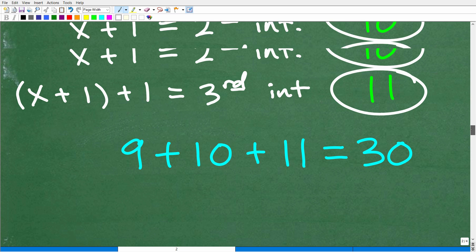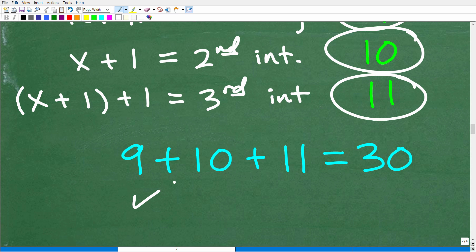And if we wanted to just check this, we can add up the sum of these three consecutive integers, 9, 10, and 11. Is it 30? Indeed, it is.